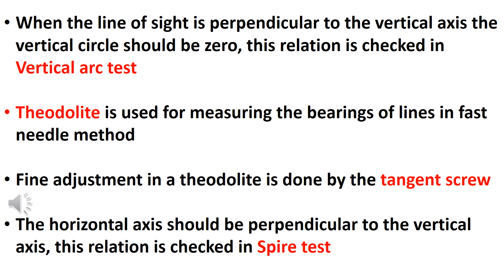Theodolite is used for measuring the bearings of lines in the fast needle method. The fine adjustment in the theodolite is done by the tangent screw.